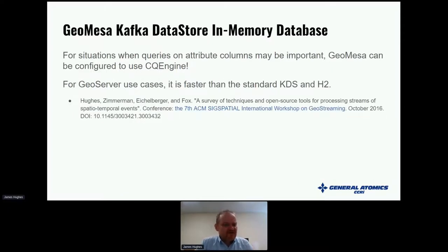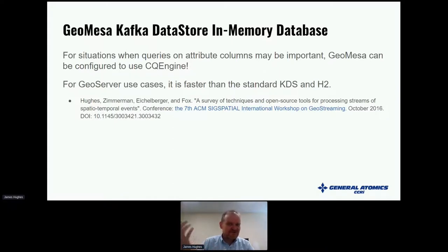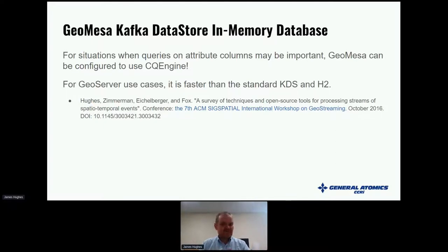If you want to query on other attribute columns — for maritime data, things like whether a vessel is underway or anchored, or its draft — we have a second option called CQ Engine. It's a really cool project on GitHub where you can turn on a CQ Engine index, specify which attribute columns you'll query by, and it maintains those indices. We wrote a paper about it showing it works well.